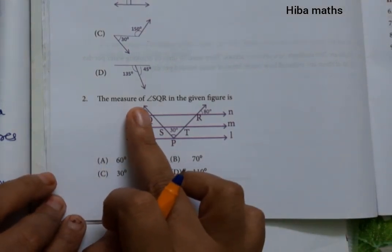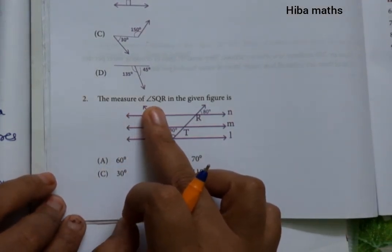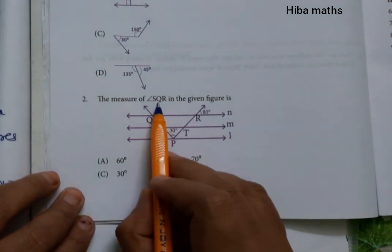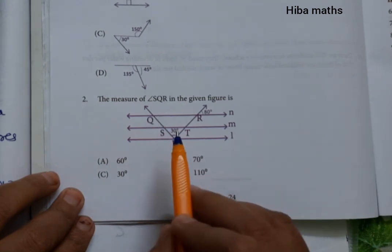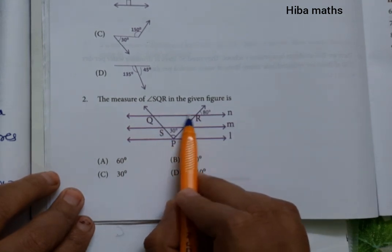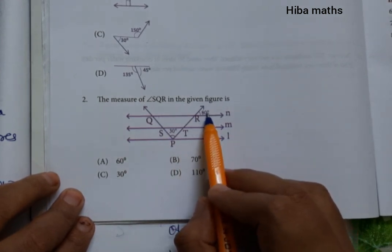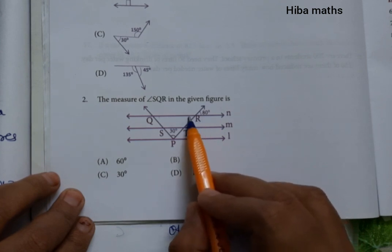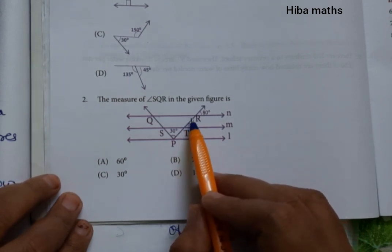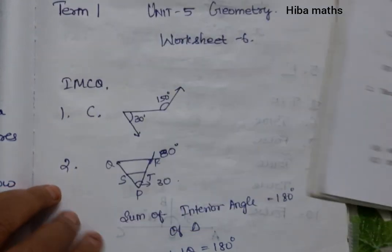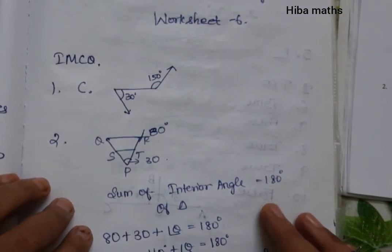Second question: measure the angle of SQR in the given figure. We have a triangle Q, P, R. Angle R is 80 degrees, and vertically opposite angles are equal. If you have two angles — one angle is 80 and one angle is 30 — the interior angles of a triangle sum to 180 degrees. We will solve using this concept.